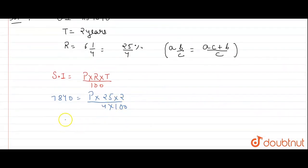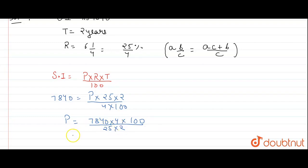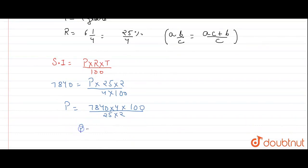Solving for P: P is equal to 7840 multiplied by 4 multiplied by 100, divided by 25 multiplied by 2. If you solve this, we get our principal, which is Rs. 62,720.